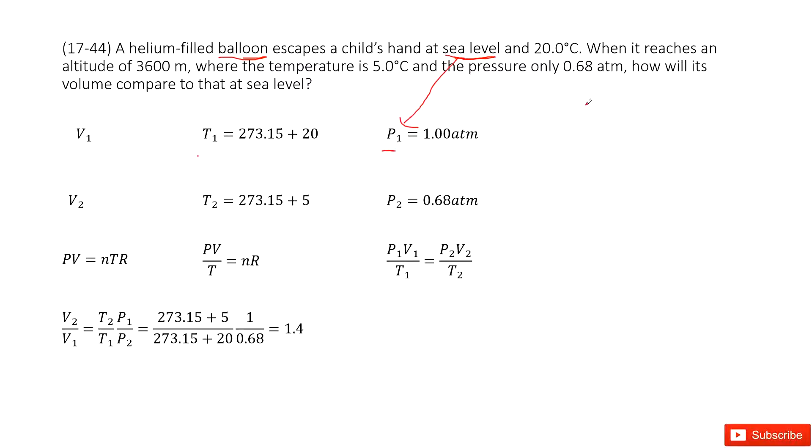And then it reaches to another position. In this time, the V2, we don't know yet, but the temperature is given 5 centigrade, and convert in unit Kelvin. And P2 is given 0.68 atm.